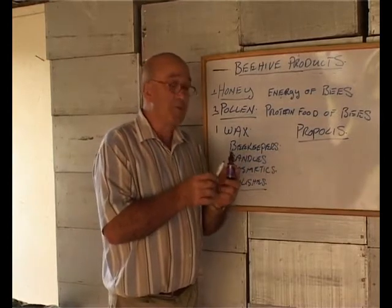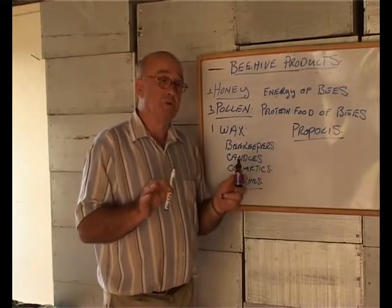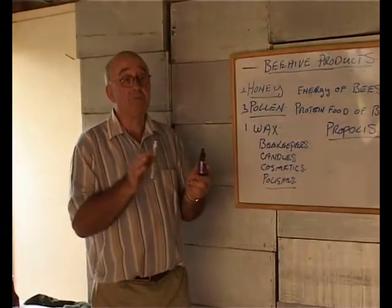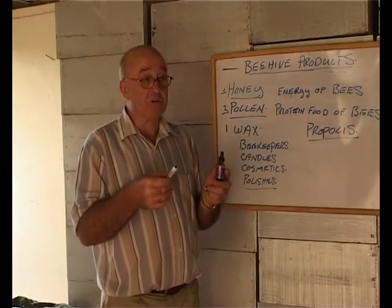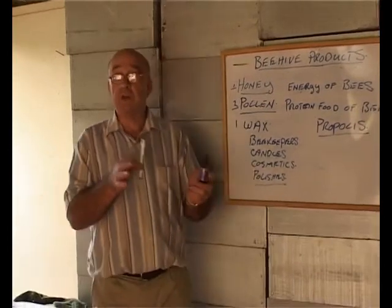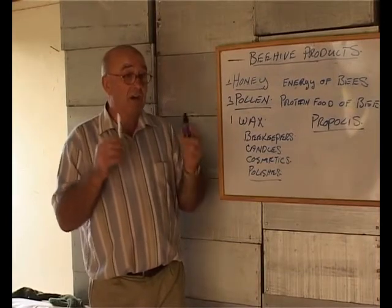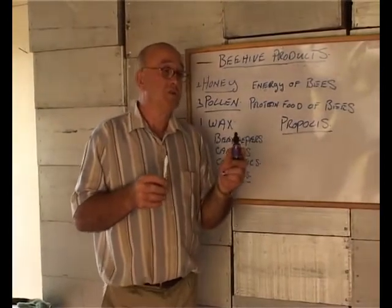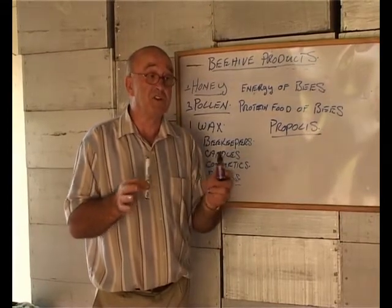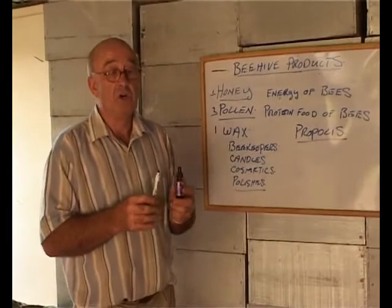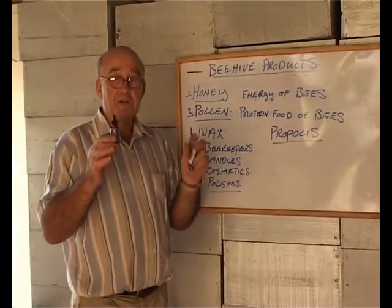The bees gather propolis resins from the buds of trees, bring it back to their hive, and coat everything in their hive with propolis. Every time a bee hatches from a frame, the cell it hatches from is coated with propolis to sterilize it before the next bee goes in. When you think about honey bees — they go outside, get contaminated, crawl all over each other inside the hive, and feed each other. Without a very good antibiotic system, 50,000 bees in one unit could not exist. Bees have learned to survive through the use of propolis, and every part of the hive is coated with it.